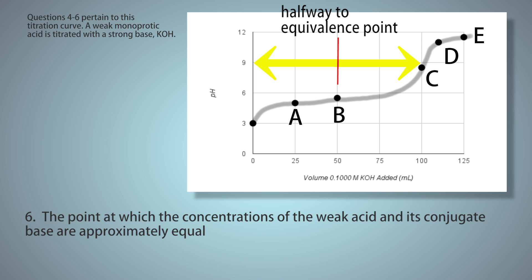We found earlier the equivalence point was C, when you add 100 milliliters of KOH. So halfway is 50 milliliters, which corresponds to point B on the graph. So the answer is B.